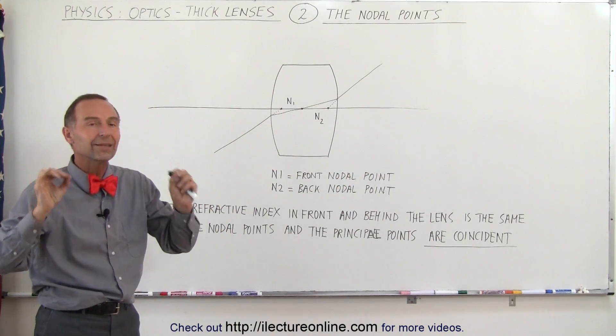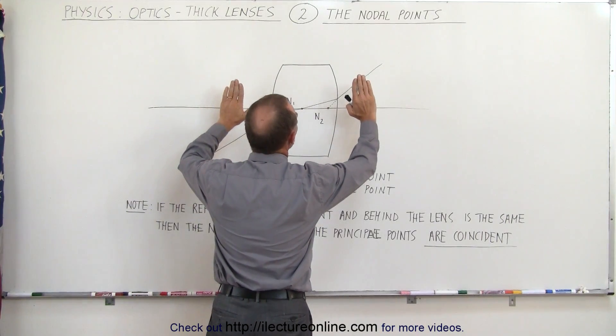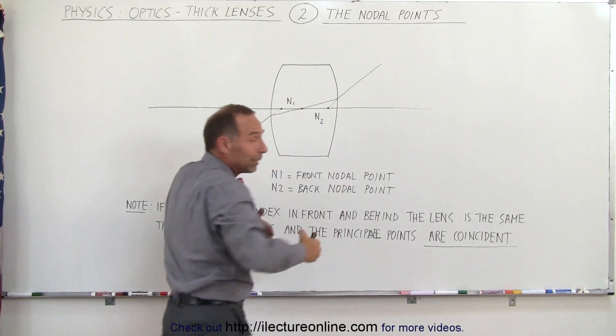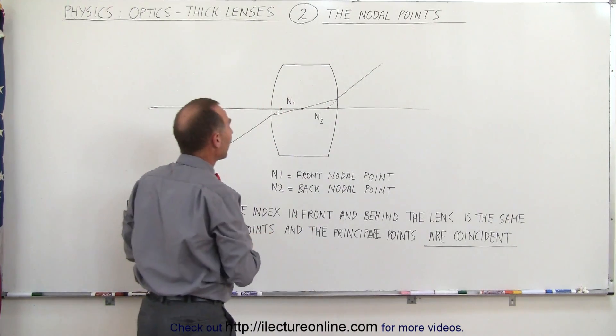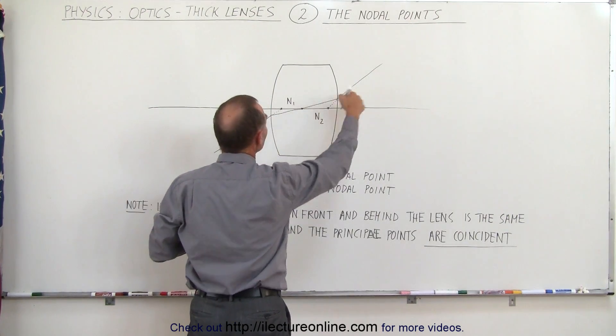In other words, they are one and the same if the refractive index of the material outside the lens, presumably air, is the same on both sides.